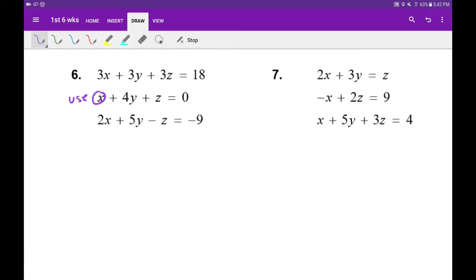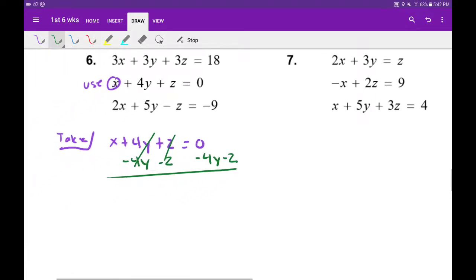So we're going to take that equation: x plus 4y plus z equals zero. I'm going to subtract 4y and z from both sides. We're going to cancel, and I'm going to get x equals negative 4y minus z.